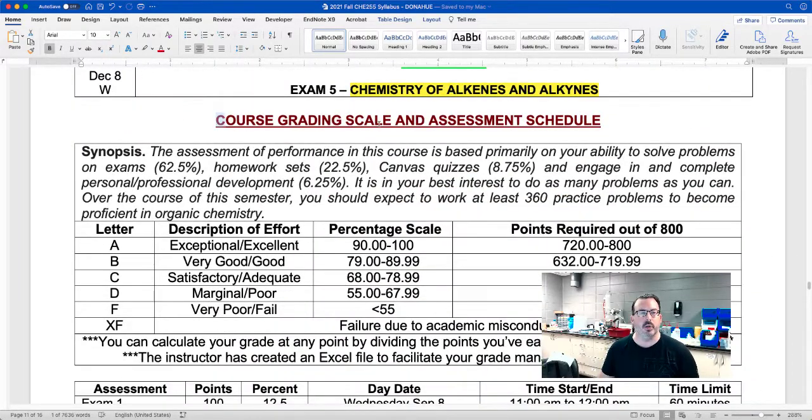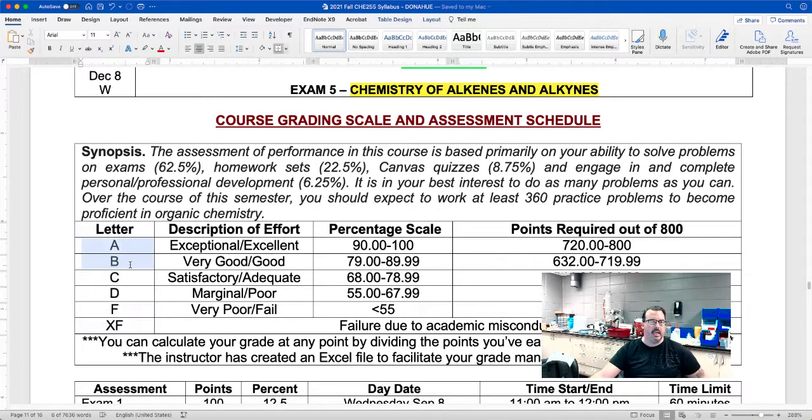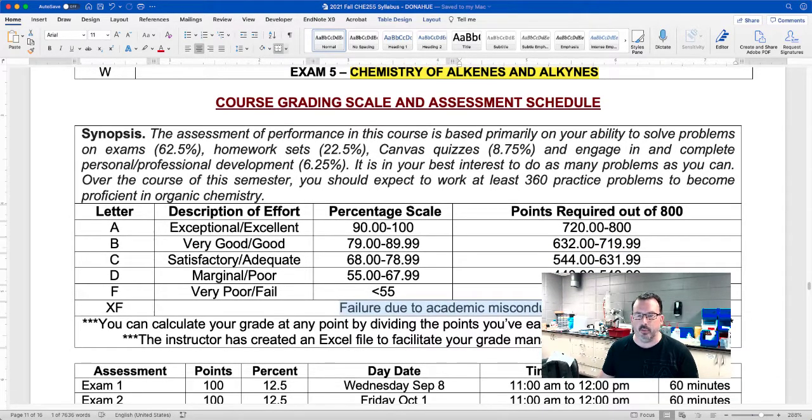So as we get to the course grading scale and assessment schedule. So this is probably what you're most interested in learning about. Your letter grade here. These are the possible letter grades. A, B, C, D, F, and XF. This is a description of the effort to earn that letter grade. So numerically, the percentage of points is listed here. So that's the percentage scale. Really what you want to think about is the points scale. So these are the points you're accumulating. So at the start of the semester, you're starting with zero points. And you're trying to earn as many points out of 800 as you can. So for an A, you need to earn a minimum of 720 points. For a B, it's this range. A C, a D, an F, and an XF is failure due to academic misconduct.